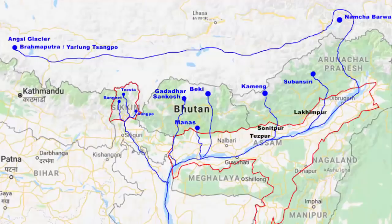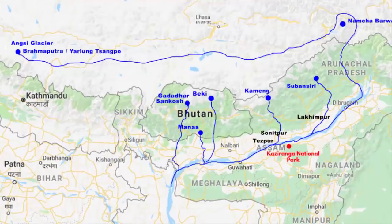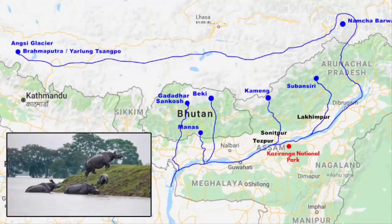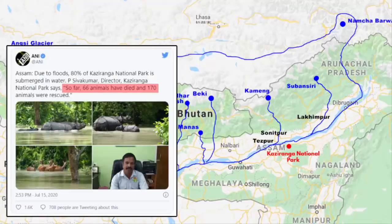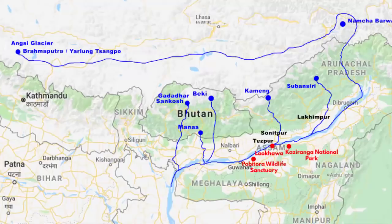All five rivers are tributaries of the Brahmaputra — they all originate from the Himalayan mountains and flow toward the low-lying valley of Assam. Presently, all these Himalayan rivers and streams are overflowing, way above their danger mark, severely affecting all districts on the banks of the Brahmaputra and its tributaries. Kaziranga National Park is also submerged in floodwater, with reports of animals dying due to this catastrophe. Other national parks and wildlife sanctuaries like Pobitra Wildlife Sanctuary, Laokhawa Wildlife Sanctuary, and Manas National Park are also severely affected.